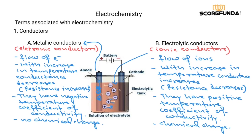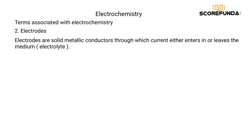Now let's look at another term associated with electrochemistry — electrodes. Electrodes are solid metallic conductors through which current either enters or leaves the medium, such as an electrolyte.